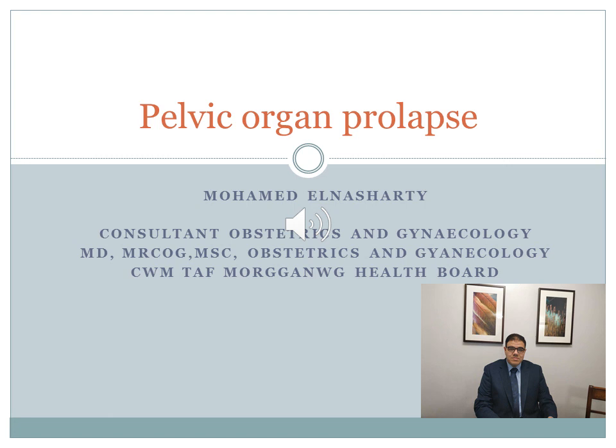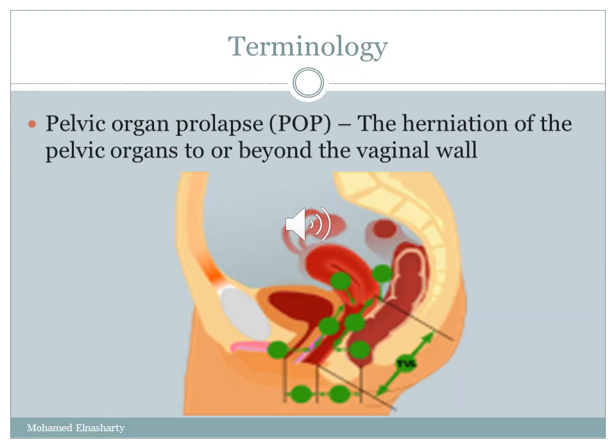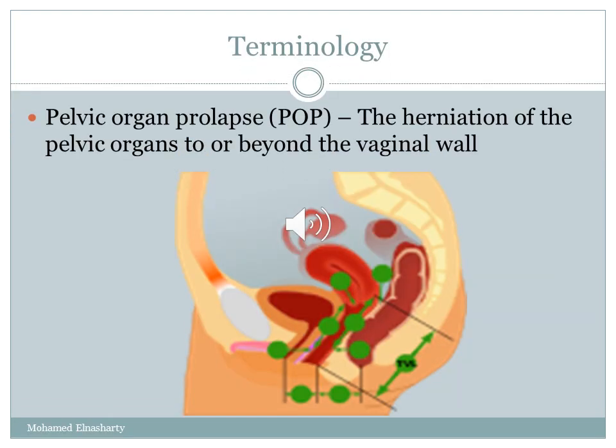What is the definition of pelvic organ prolapse? Pelvic organ prolapse is defined as downward displacement of pelvic organs from their original position into or beyond the vagina. There is an enormous variation in clinical presentation, which varies from minimal descent to complete eversion of the vagina along with the uterus, bladder, and rectum.